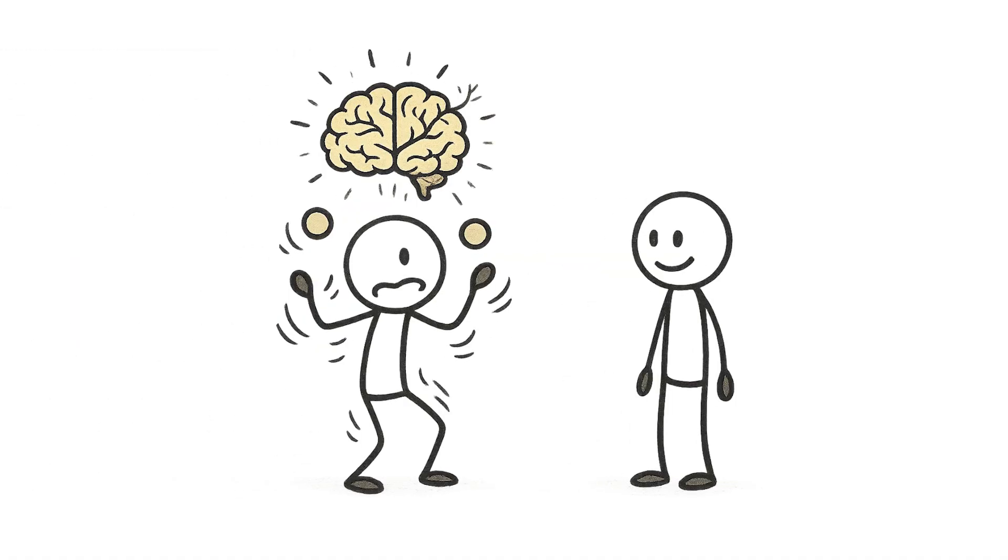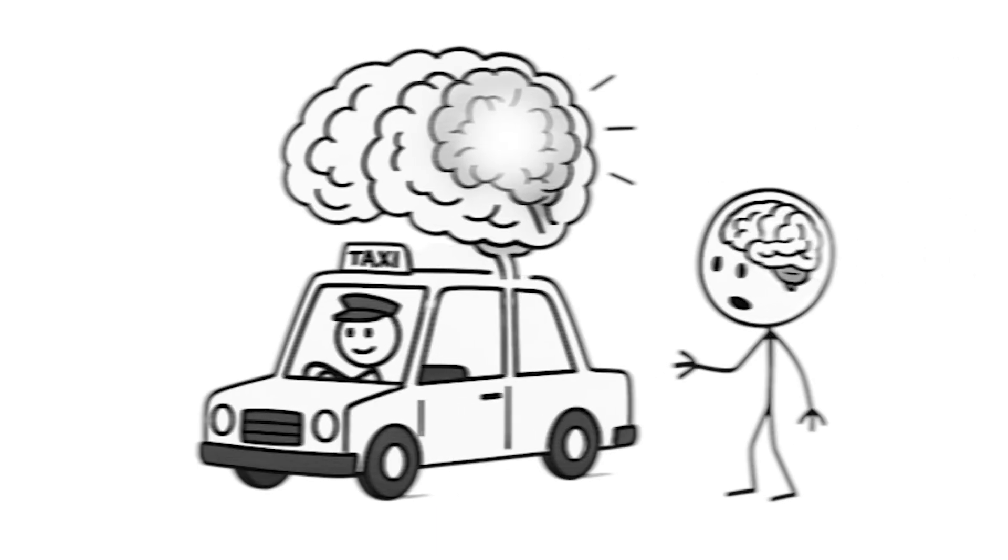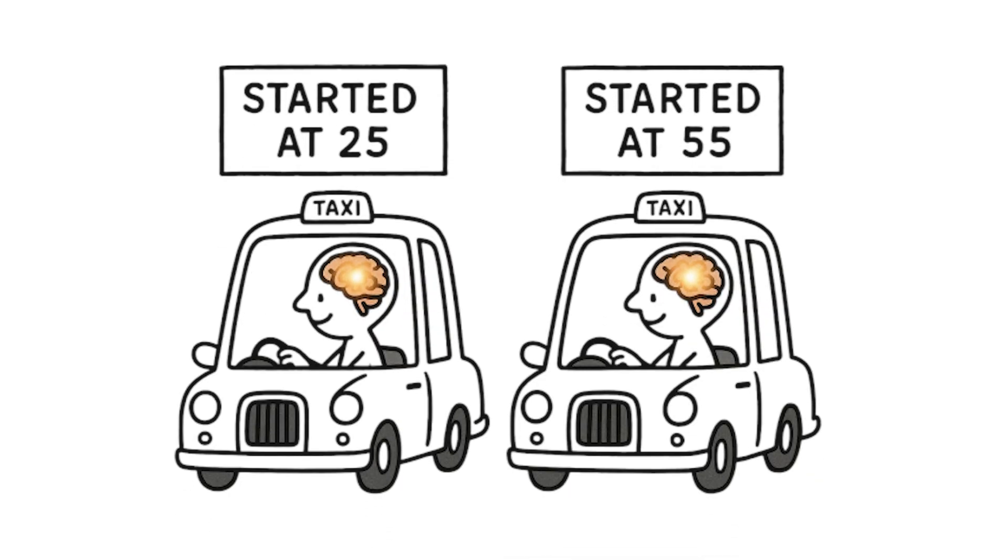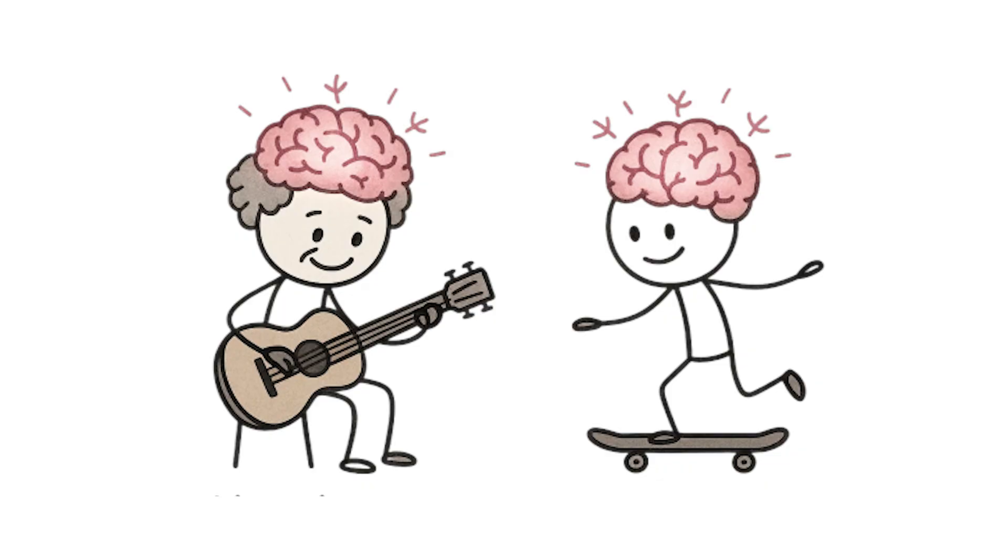Brain scans show that learning new skills creates real physical changes in your brain at any age. London taxi drivers have bigger memory areas for memorizing all those street layouts, and it doesn't matter if they started driving cabs at 25 or 55. Your brain keeps adapting no matter how old you are.